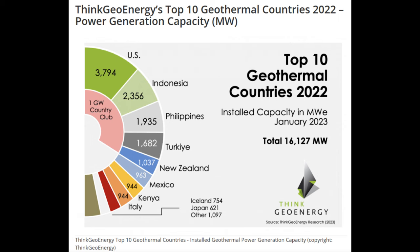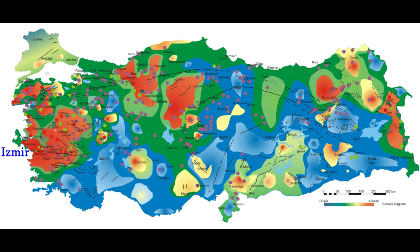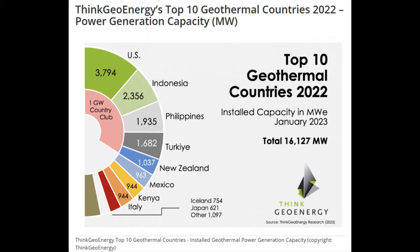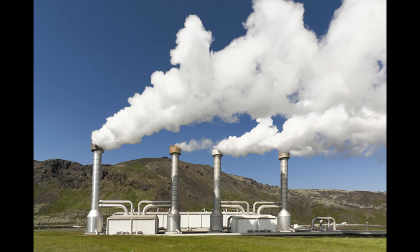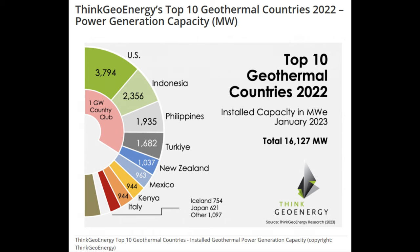Fourth in the world in geothermal is Turkey. Only about three percent of the electricity generated in Turkey is from geothermal, but a lot of the geothermal energy is used for heating. The west coast area, especially around the large city of Izmir, has the largest potential and the most plants in use. Fifth in the world is New Zealand — another cluster of seismically active islands in the Pacific. New Zealand is going green as much as it can, and right now 17 percent of the nation's electricity is derived from geothermal.